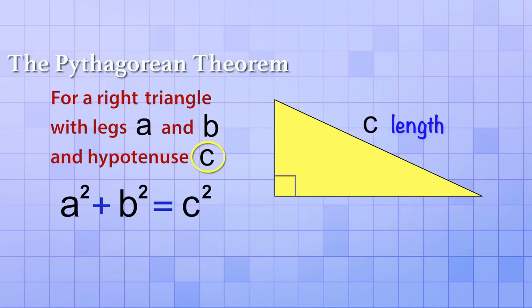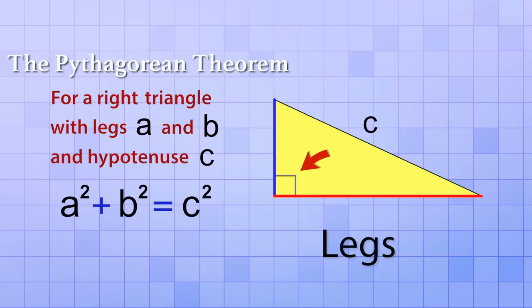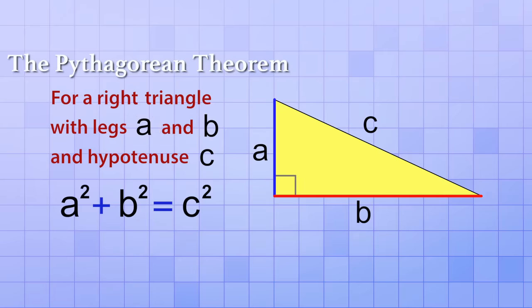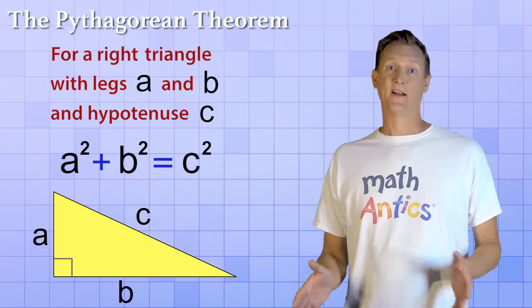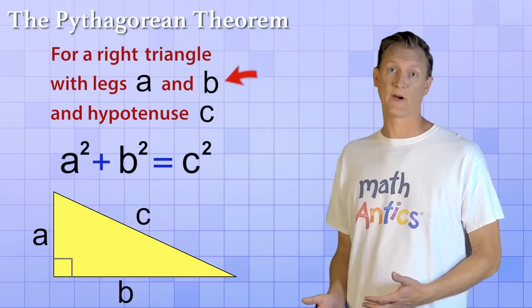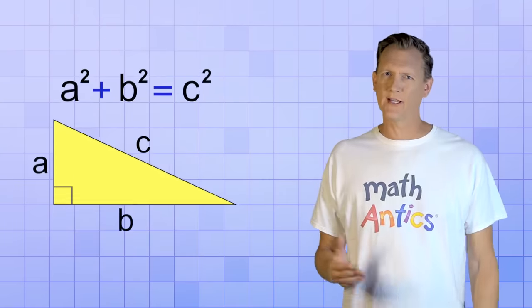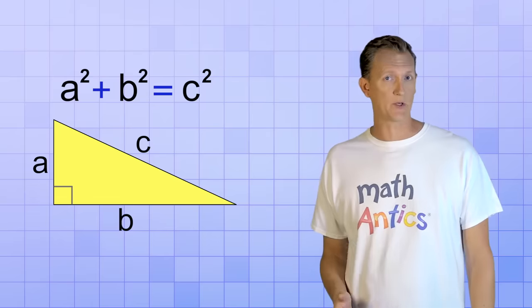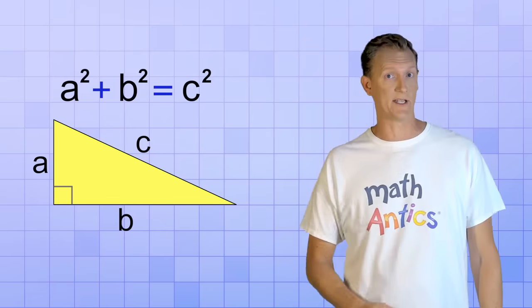c is the length of the hypotenuse side. The other two sides of the triangle — the ones that do touch or form the right angle — are called its legs. Our Pythagorean Theorem definition uses the variable names a and b to represent their lengths. And it doesn't matter which leg is called a and which leg is called b, as long as you keep track of which is which after you make your initial choice. Now that we know the various parts of the Pythagorean Theorem, let's think about what the relationship a squared plus b squared equals c squared is really telling us.